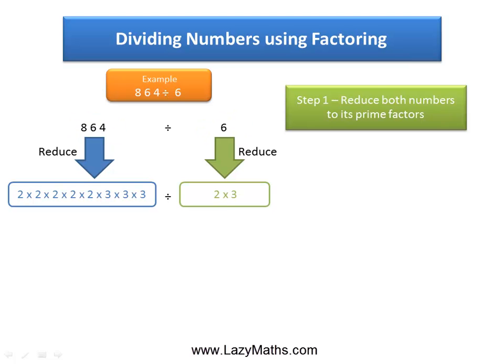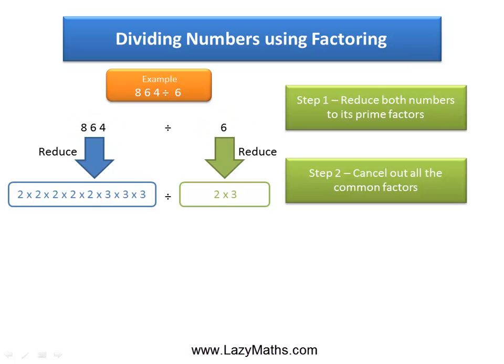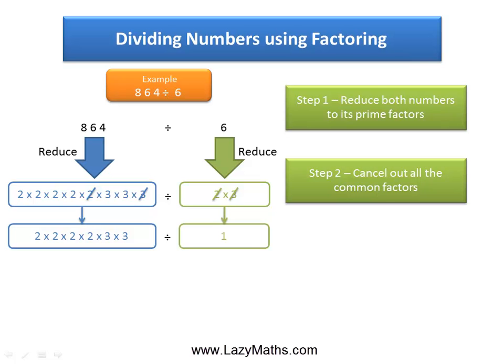The next step is to simply cancel out the common factors from both sides. So we cancel out the 3 from both sides, cancel out the 2 from both sides, and now we are left with 2 times 2 times 2 times 2 times 3 times 3, and 1.